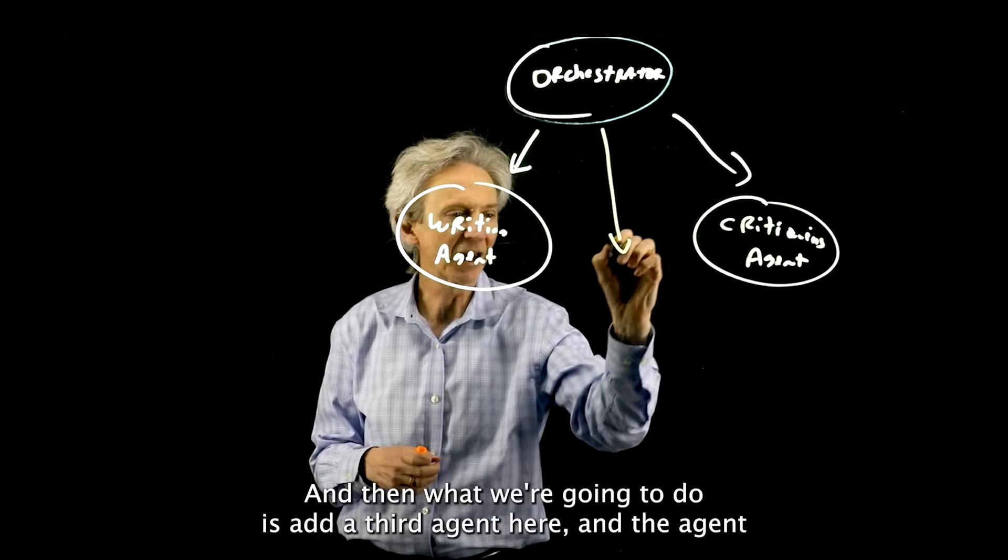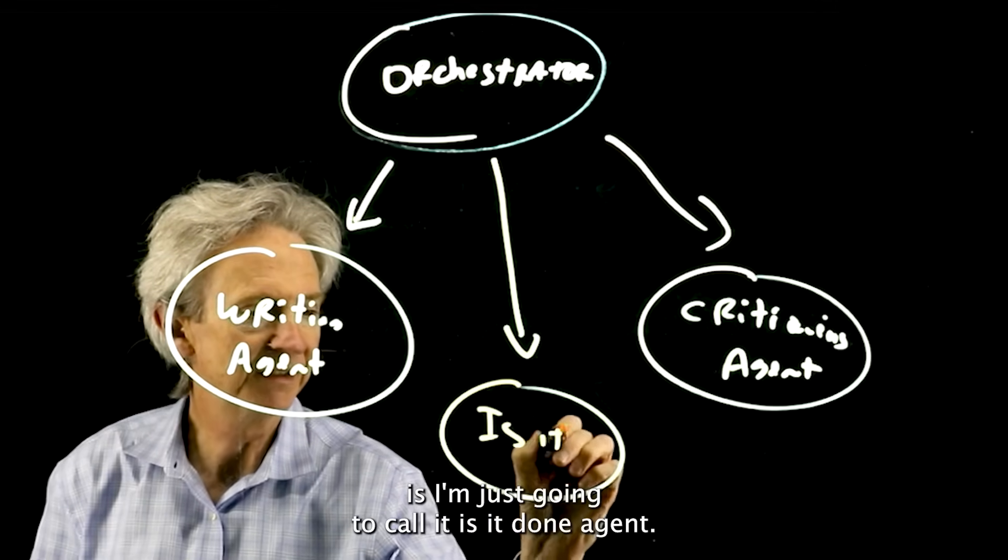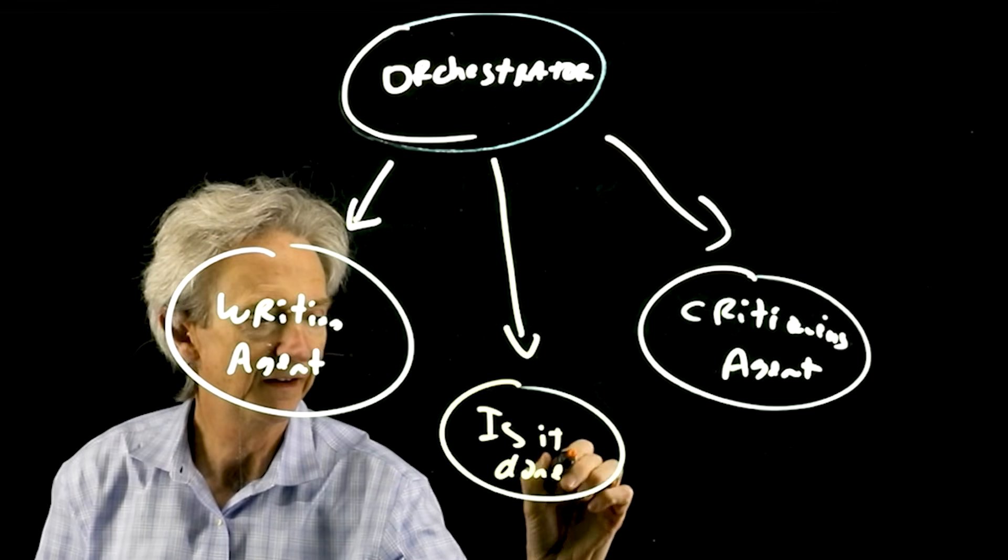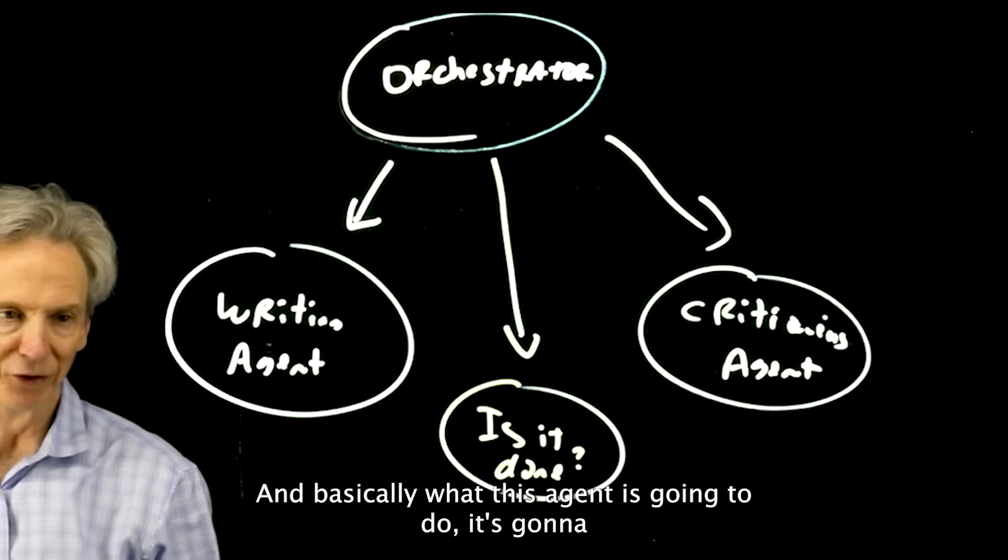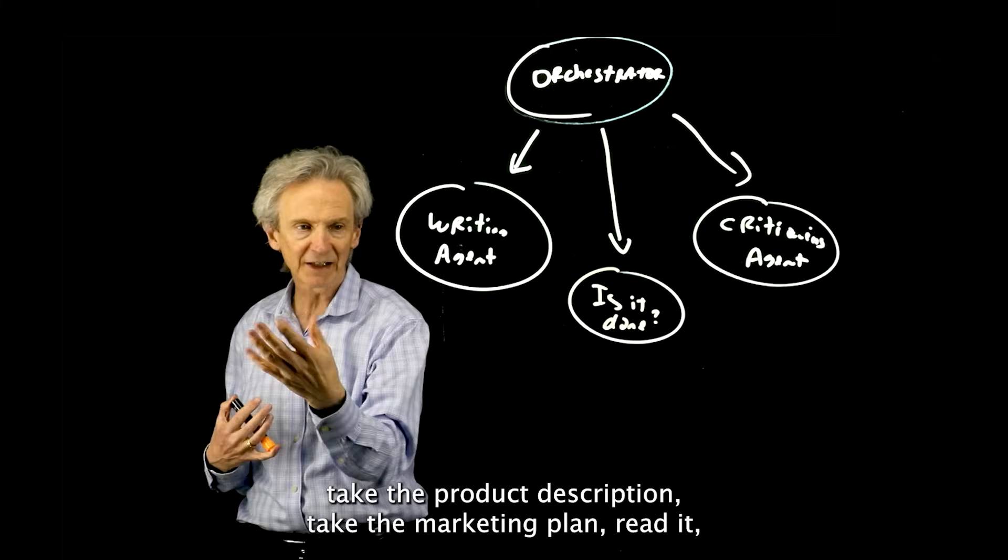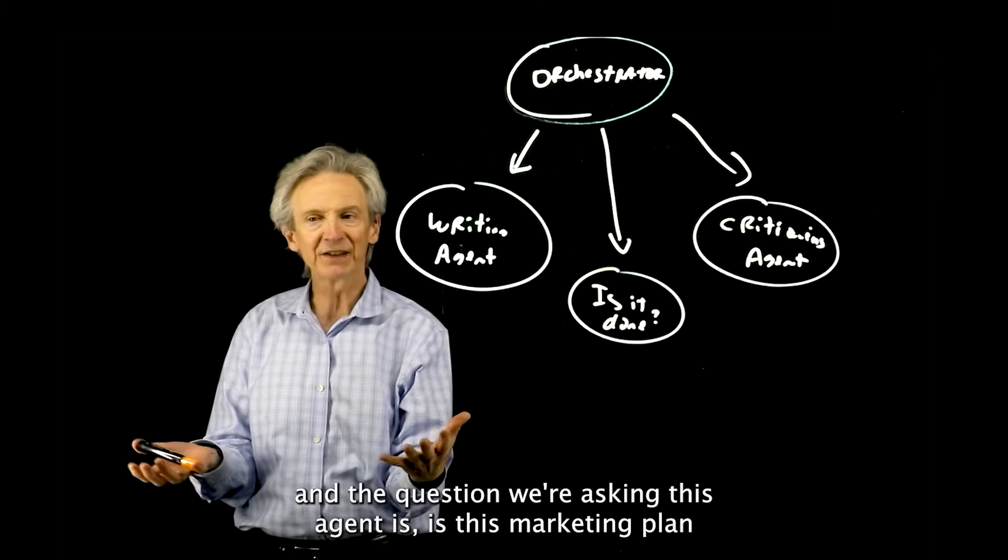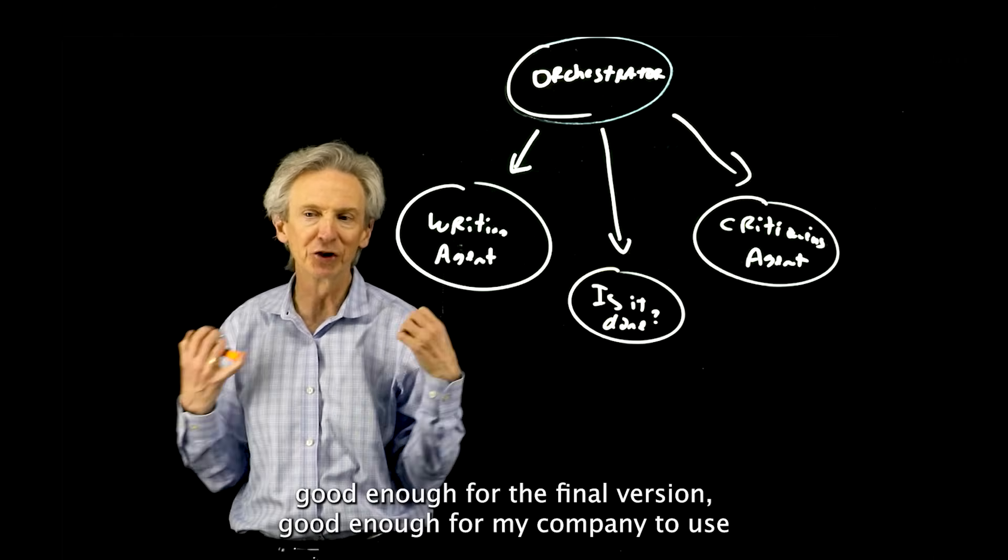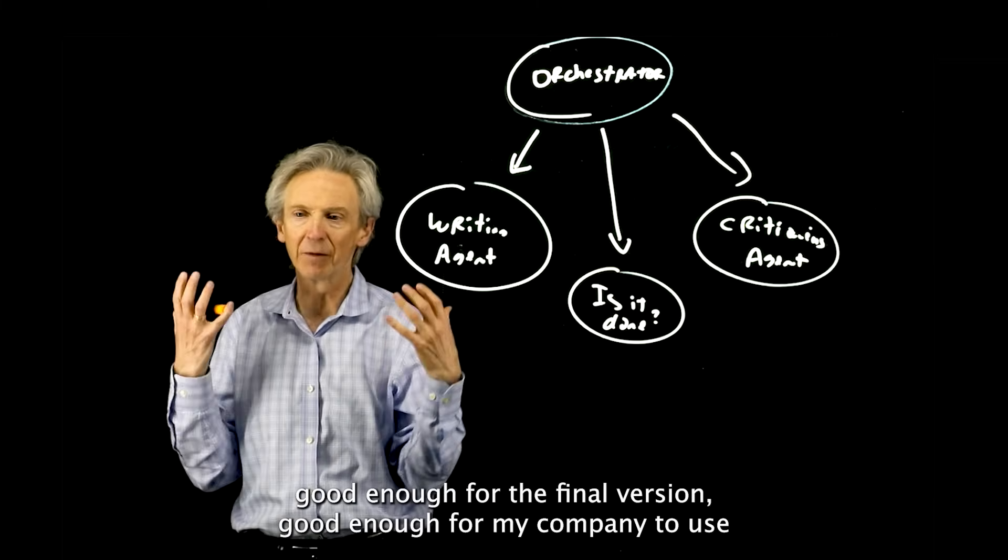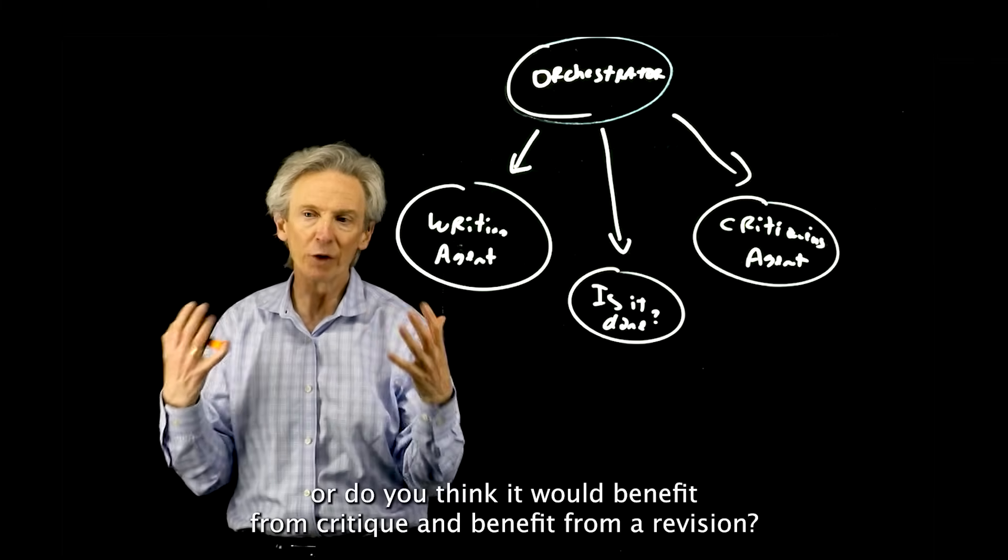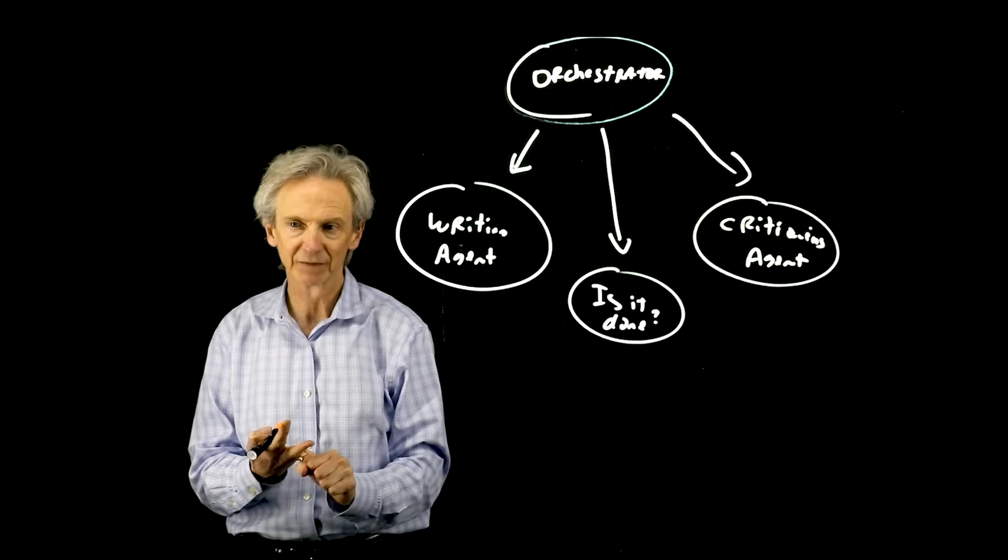Then we're going to add a third agent here, I'm just going to call it the is it done agent. Basically what this agent is going to do, it's going to take the product description, take the marketing plan, read it. The question we're asking this agent is, is this marketing plan good enough for the final version, good enough for my company to use? Or do you think it would benefit from critique and benefit from a revision?